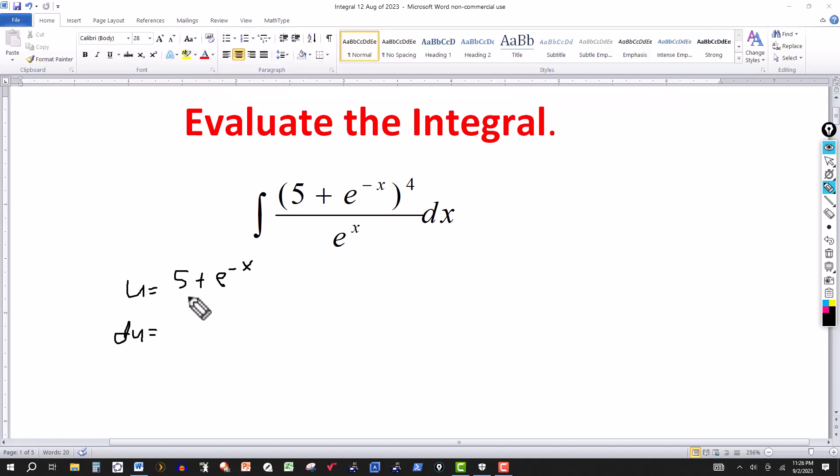Derivative of 5 would be 0. Derivative of e to the minus x would be e to the minus x times the derivative of minus x which would be a negative 1. Then I'm going to multiply both sides by a negative, giving me a negative du on this side. This negative one on the right will cancel.